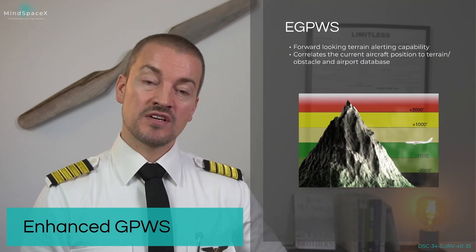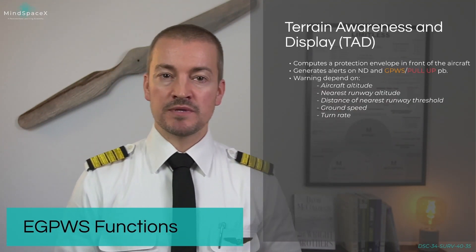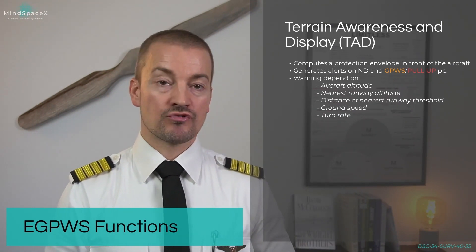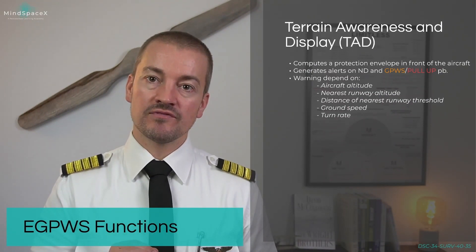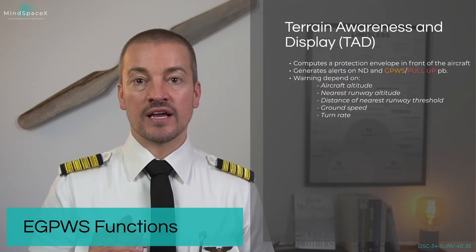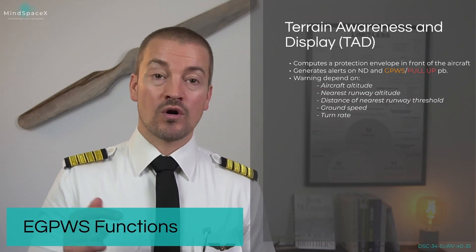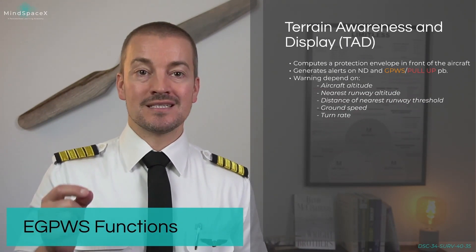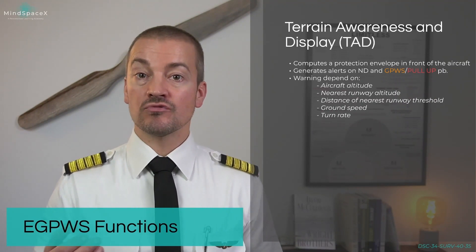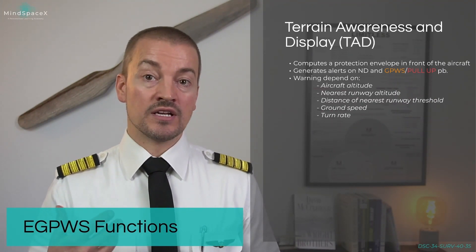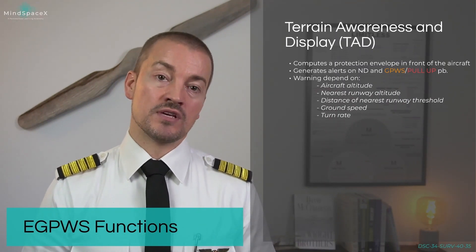Any terrain features 2000 feet below your current altitude are not shown on the display. The first part of the EGPWS is the TAD — the Terrain Awareness and Display function. This function computes a protection envelope in front of the aircraft and then generates alerts on the ND together with an EGPWS caution or a red pull-up on the associated EGPWS button. The warnings depend on the aircraft's altitude, the nearest runway altitude, the distance of the nearest runway threshold, the ground speed, and the turn rate of the aircraft.